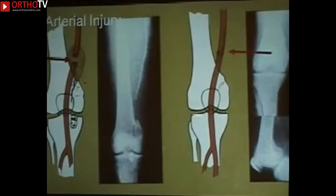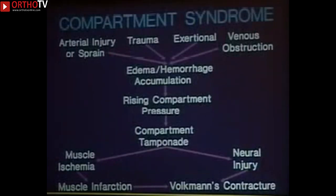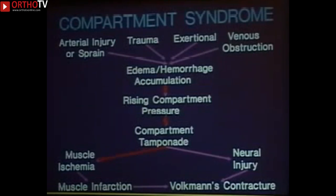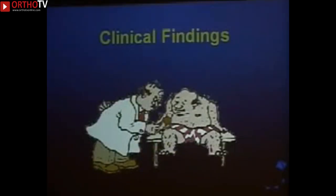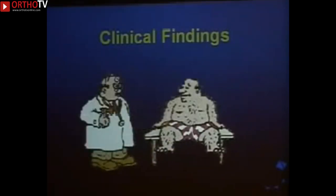All these traumas cause fluid — edema fluid and hemorrhage — to accumulate in closed spaces, causing rising compartment pressure, eventually compartment tamponade, which leads to death of the muscle and nerves in that compartment, and then more edema from decreased blood flow. Left to its natural course, you end up with permanent nerve damage, muscle infarction, and Volkmann's contracture.